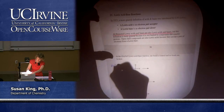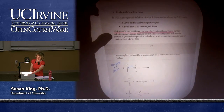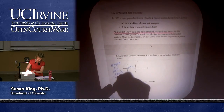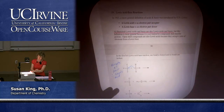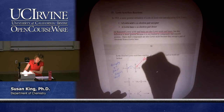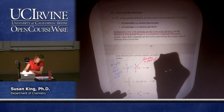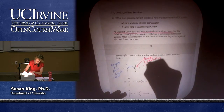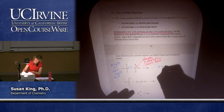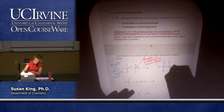Boron trifluoride accepts an electron pair, so by the Lewis acid-base definition it is a Lewis acid. Nitrogen donates a pair of electrons, so by the Lewis acid-base definition it is a Lewis base. In the product — the Lewis acid-base adduct — boron now has an octet and nitrogen has an octet. However, we do have a positive charge on nitrogen and a negative charge on boron.